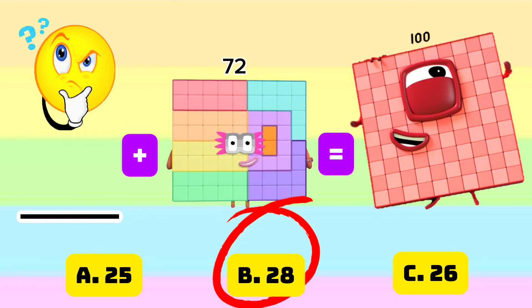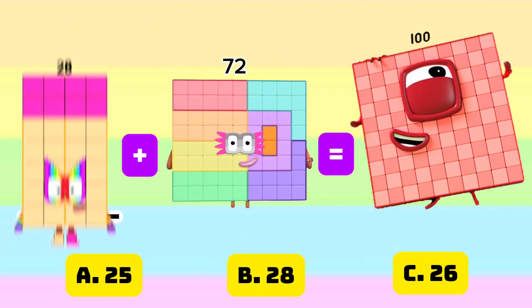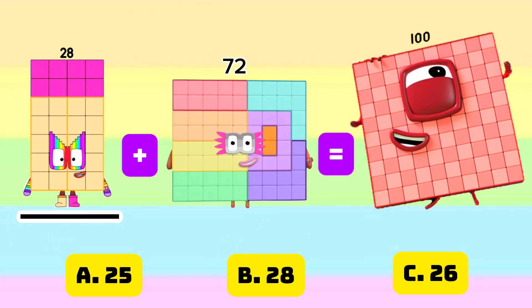And the correct answer is letter B, 28. 28 plus 72 is equals to 100.